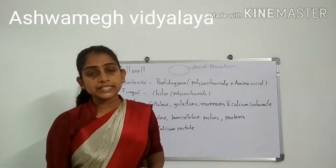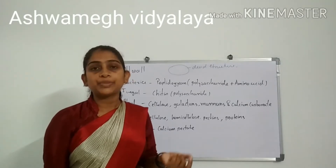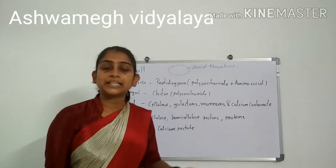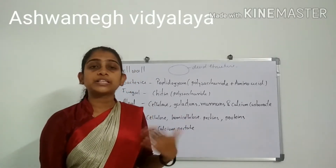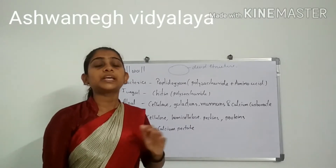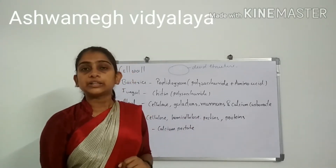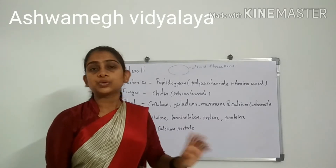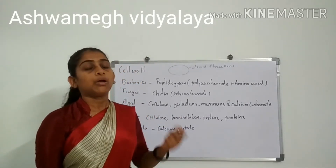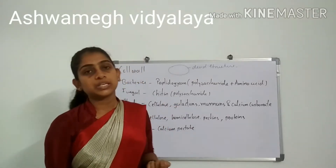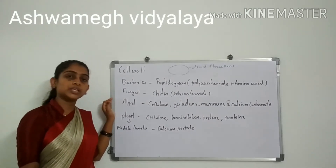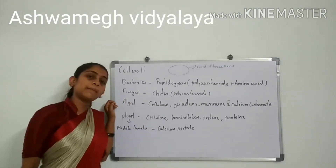Prokaryotic cell wall is a broad group. Some organisms are animal-like, some are bacteria-like, and some are plant-like in structure. Animal-like organisms will not have a cell wall, while plant-like organisms will have a cell wall. It depends on which group the organism belongs to.